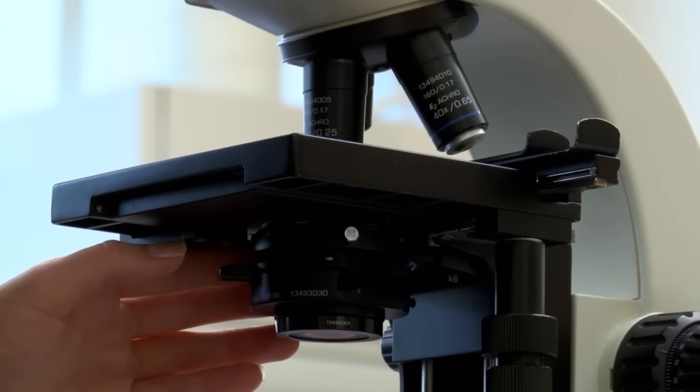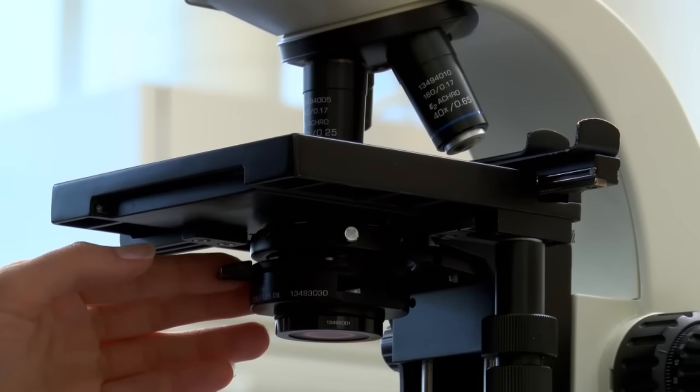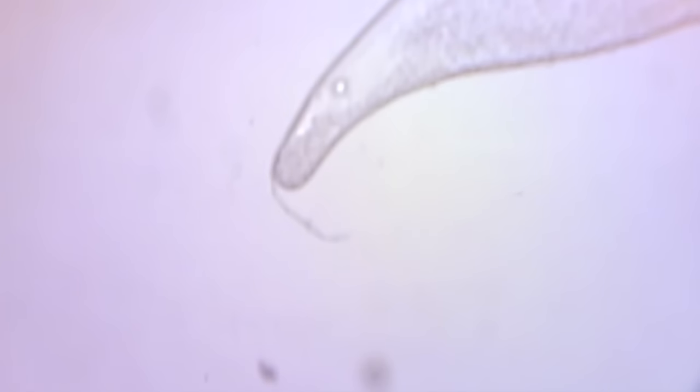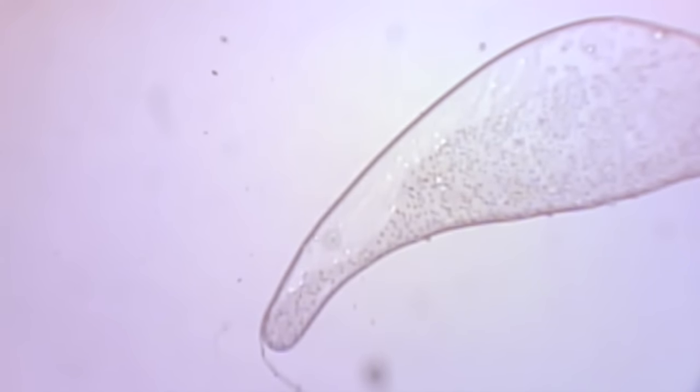If you are observing unstained specimens, use the stage diaphragm to reduce the amount of light passing through. Also, try to find a bubble or other easily observed object under the cover slip and focus on that.